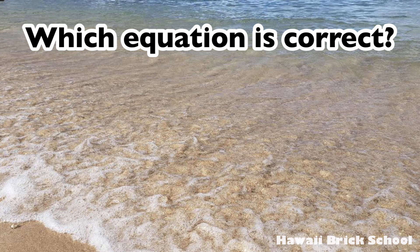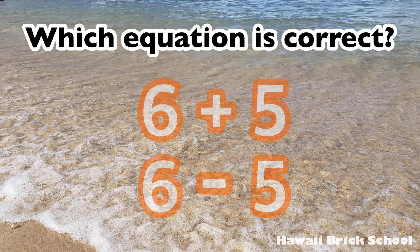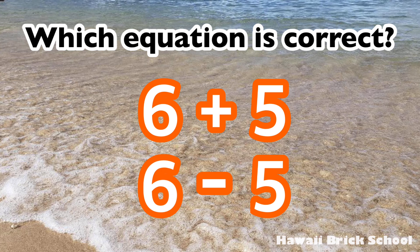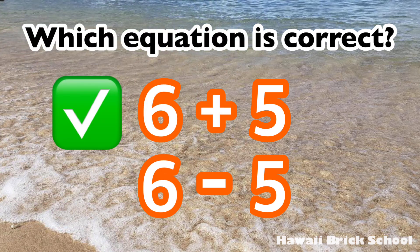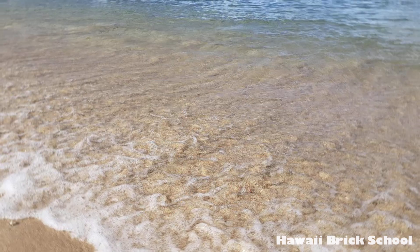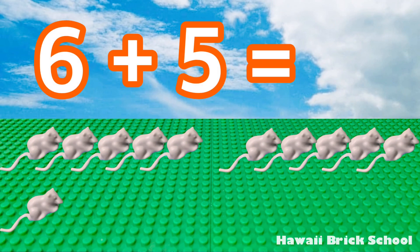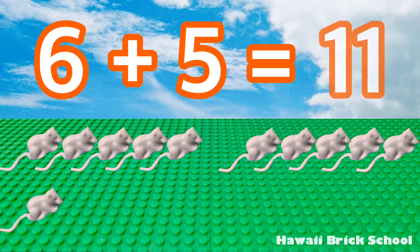Which equation is correct: 6 plus 5, or 6 minus 5? The correct equation is 6 plus 5. 6 plus 5 is 11.